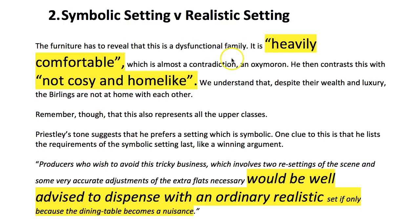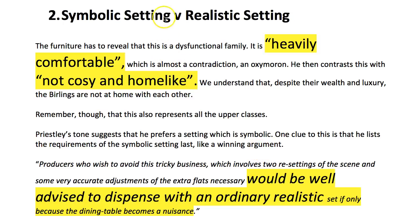In the symbolic setting, Priestley says the furniture has to be 'heavily comfortable' — this is nearly an oxymoron, where two contradictory ideas are jammed together. You'd think furniture that was really heavy might not be comfortable, but he's making it comfortable. Then there's another oxymoron: it's 'home-like' but not cozy. The symbolism is that we are at home with a family but they are not cozy with each other — the atmosphere is heavy. The clue is where he advises the director to dispense with an ordinary realistic set.